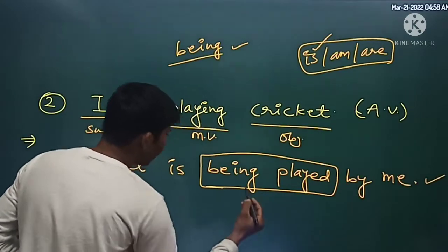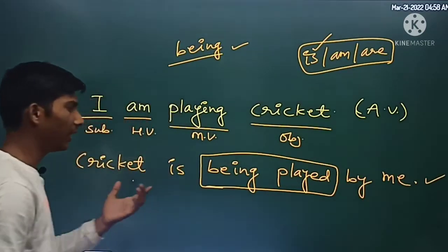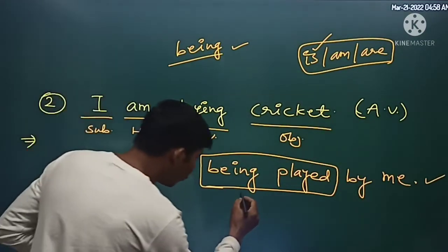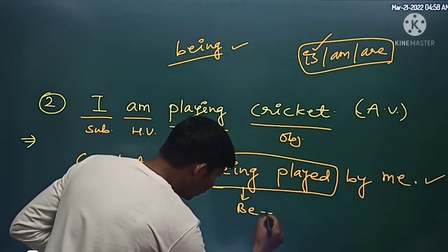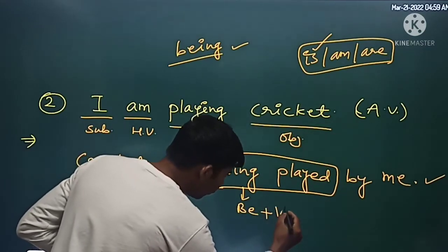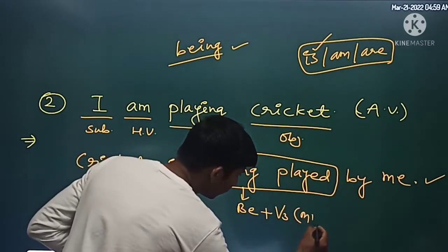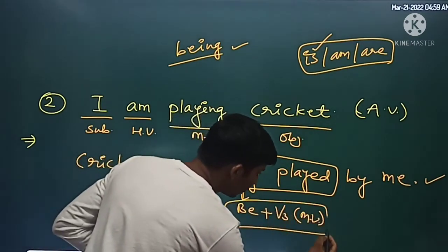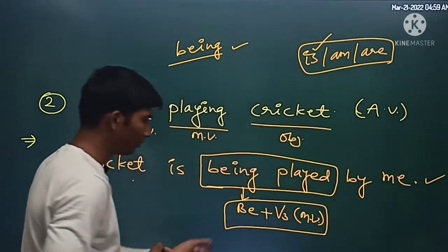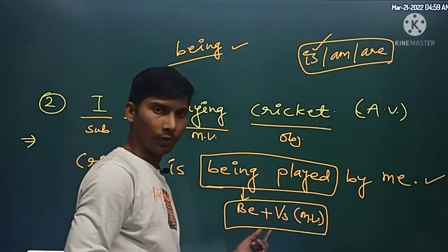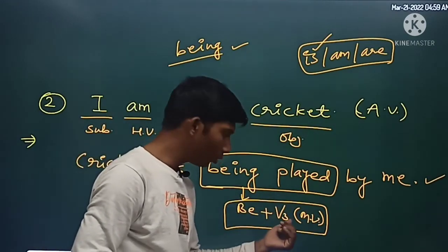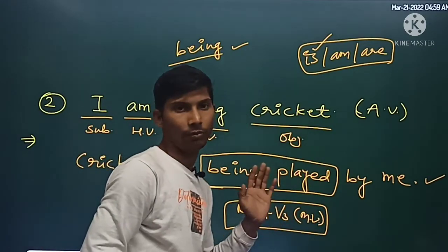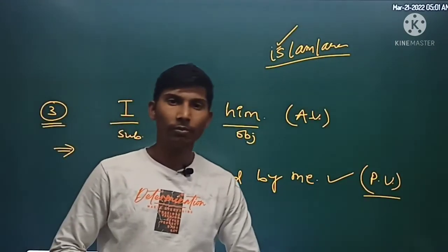In every passive voice sentence, you will always observe that there is a form of verb 'be' plus the third form (V3) of the main verb. This particular pattern — form of 'be' plus V3 of main verb — is always present. Thank you very much, my dear friends.